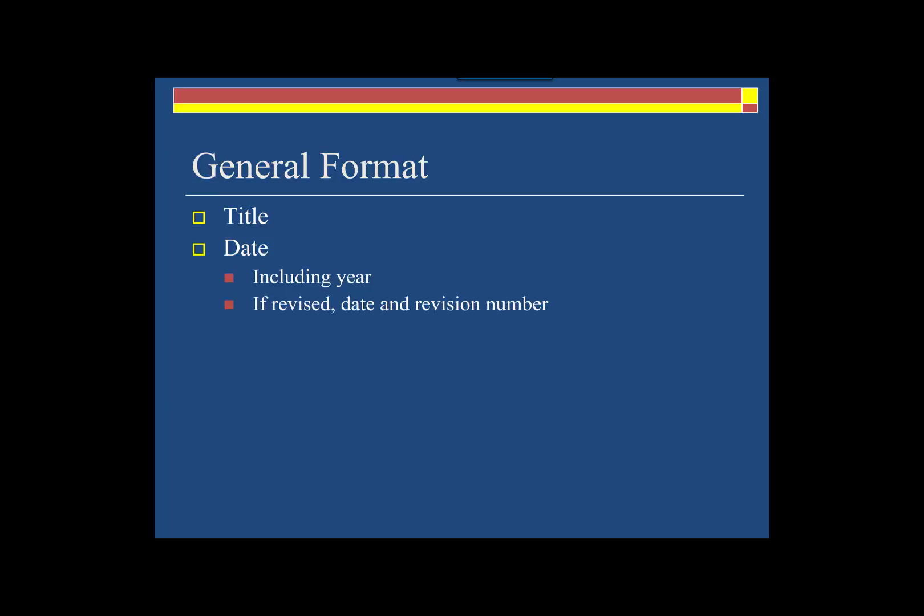On the next several slides, we'll walk through the general form for an SOP. The SOP should have a descriptive title that outlines its purpose. The SOP should be dated, and the date should include the year for legal purposes. SOPs are usually revised and updated on a regular basis, and when they're revised, the date and the revision number should be prominently displayed at the top. The name of the author should be listed, and beneath it there should be a brief statement of the purpose for the SOP.